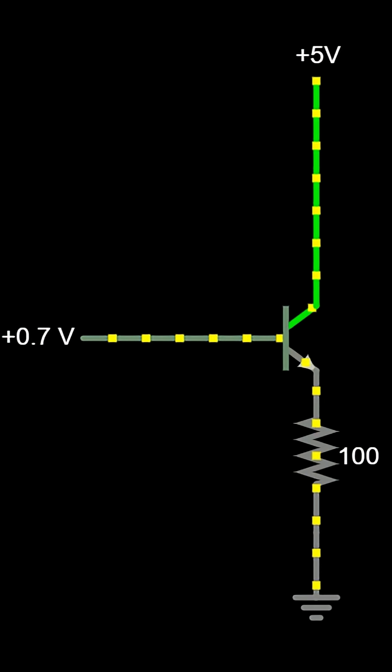When the base-emitter junction is forward biased and the collector-base junction is reverse biased, the transistor allows current to flow.